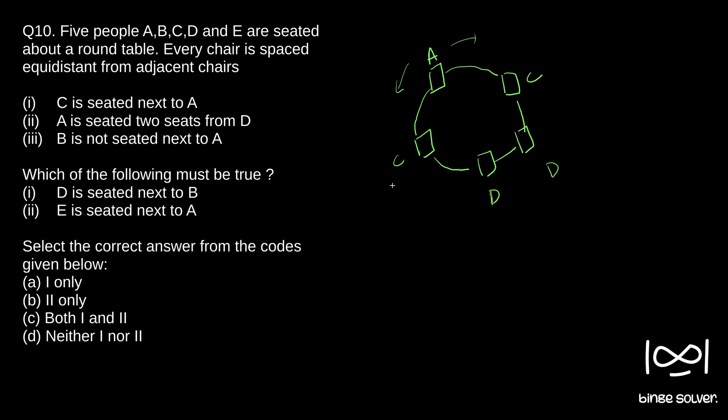Now B is not seated next to A. So we will draw these two situations as two separate cases. So we will say this is D. Then since B is not seated next to A, B has to be here. So this is case one.